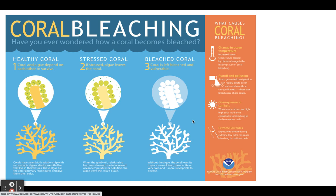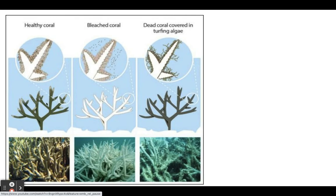Healthy coral involves a symbiotic relationship between an algae — called zooxanthellae — and the organism that builds the coral skeleton. When the coral becomes stressed from warming temperatures, the zooxanthellae are ejected from the coral, which is called bleaching. You can see in this diagram the healthy skeleton with zooxanthellae inside, then the bleached state where they've been expelled. Bleaching can be reversed — if temperature drops, the zooxanthellae can re-enter the coral and it can reset.